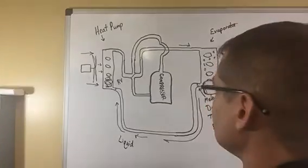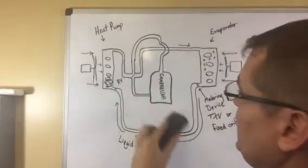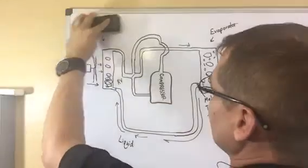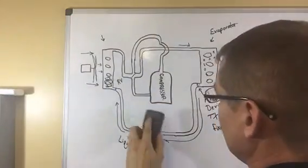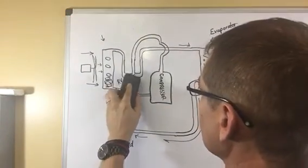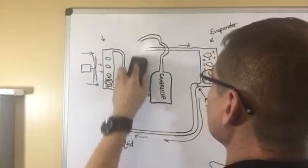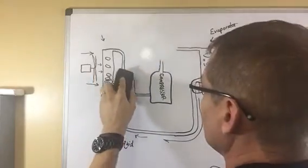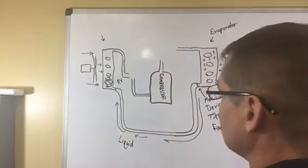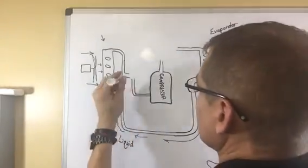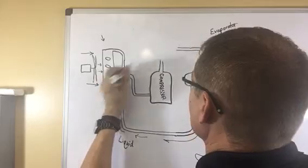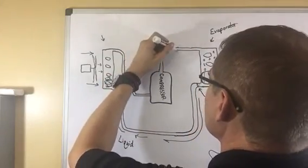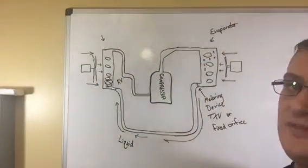If it was not a heat pump and you did not have the reversing valve in there, then it would just look something like here. I'll just draw it here. So your hot gas would go. So now this is just an air conditioner. This would be an example of...